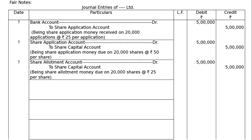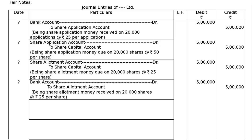Share allotment account debited to share capital account. Being share allotment money due on 20,000 shares at the rate of Rs.25 per share. Next, allotment received: bank account debited to share allotment account. Being share allotment money received on 20,000 shares at Rs.25 per share. The allotment money was received in full — Rs.5 lakh.